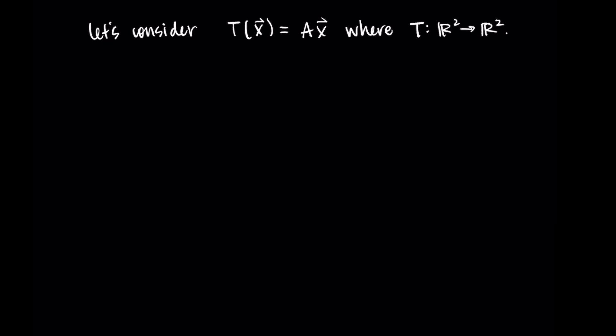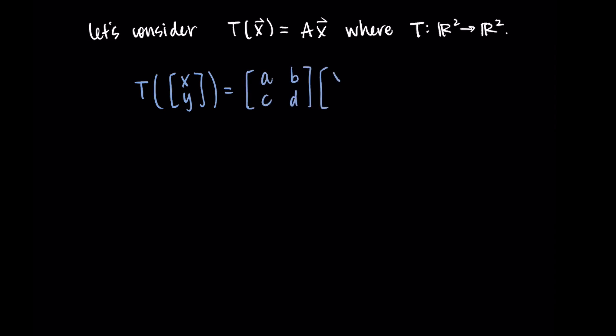So before we jump into the examples, let me go through some of the basic algebraic work to make sure we're on the same page. We're going to be considering transformations T of X equals A times X, where T goes from R2 to R2. So what this looks like is that we're taking T of an input vector X, Y — and I'm specifically going to be thinking about it as an X and a Y since we're going to be graphing these in two dimensions. Then T takes the matrix A, which might look like A, B, C, D, and multiplies it by the vector X, Y. I like to think of this matrix-vector multiplication as taking a linear combination of the columns.